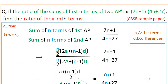Here the ratio of the sums of first n terms of two APs is given, so there are two APs with different first terms and common differences. The sum of n terms of the first AP divided by the sum of n terms of the second AP equals 7n plus 1 by 4n plus 27. We know that sum of n terms of first AP is n/2 into 2a plus n minus 1 into d, and for the second AP it is n/2 into 2A plus n minus 1 into D.